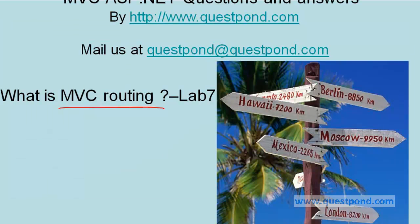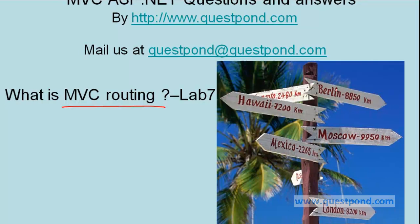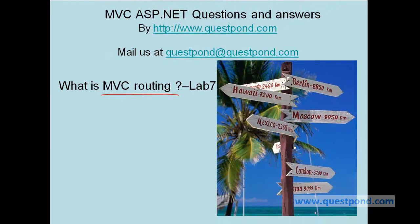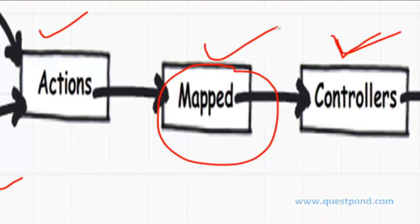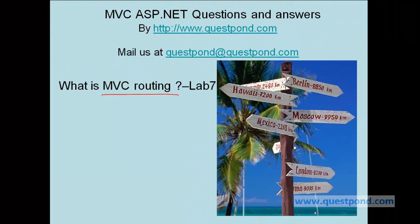What is MVC routing? MVC routing is a way by which you can configure this mapper functionality. By configuring this mapping functionality, we can define how the actions are mapped to the controllers and how you define your MVC URL. In this whole video we are going to see how to configure your MVC routing and take better control over the URL so that you can define a more user-friendly URL from the end user point of view.